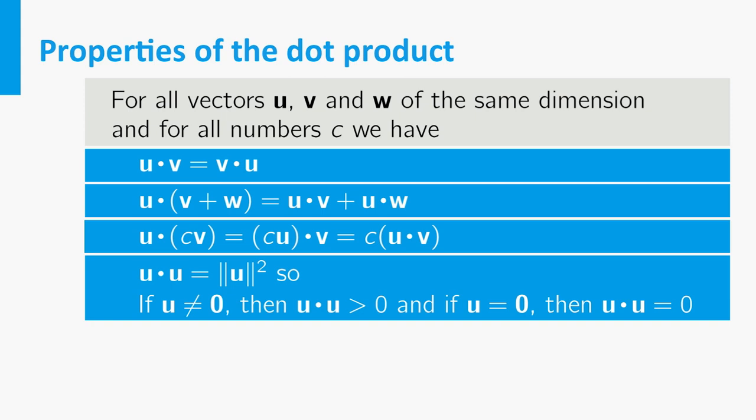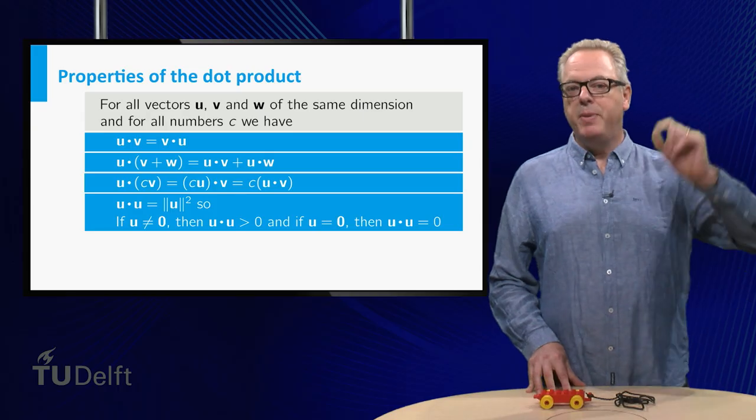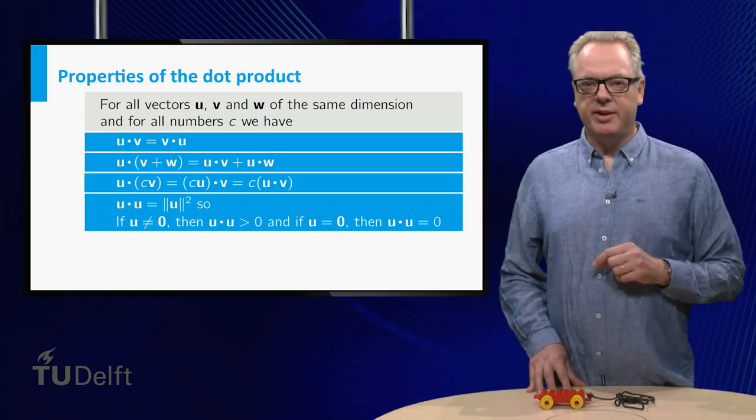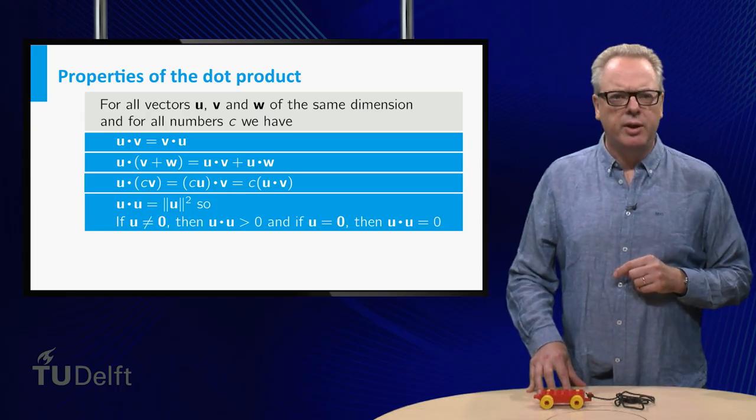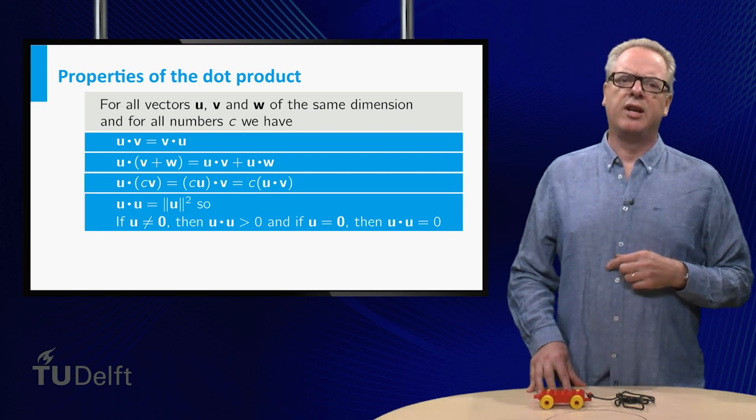Especially the first three properties make you think that calculations with the dot product are more or less the same as calculations with numbers. But be careful. Some weird things can occur. Curious? Make the exercises.